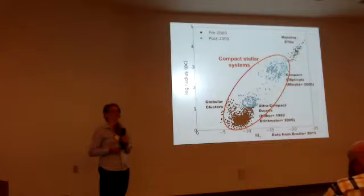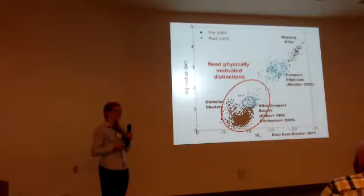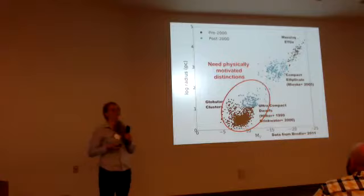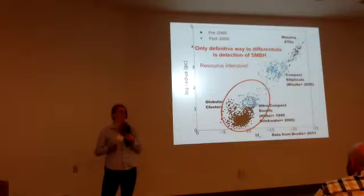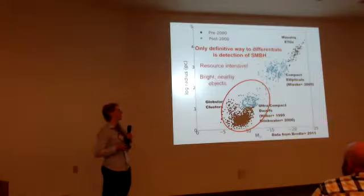So what we really need are physically motivated distinctions. Right now the only way to tell if a UCD is more of a galaxy rather than a cluster is through the detection of a supermassive black hole in that UCD — the idea being that some fraction of UCDs are stripped remnants of larger galaxies. However, that's an extremely resource-intensive task; you essentially need an entire night of AO per object, and even then you're limited to bright, nearby objects.